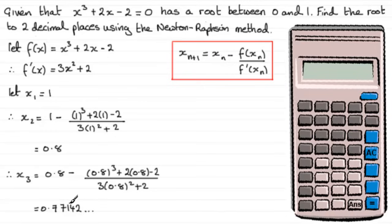So to two decimal places, this is going to be 0.77, but we can't stop here because we've got to make sure we have no change in this third digit, so we need to carry on this process.